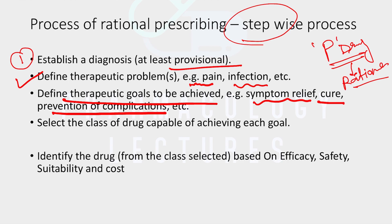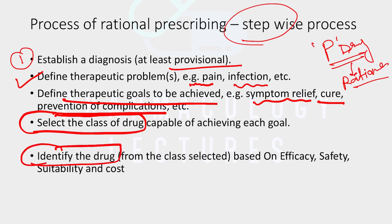Then choose the appropriate drug class, because many classes of drugs are available for the same indication. First choose a class according to the patient's condition, then identify a single drug from that class based on four factors: how efficacious the drug is, how safe it is, how suitable it is for the patient, and whether it has a reasonable cost. These four factors guide selection of the individual drug.